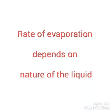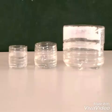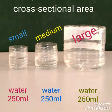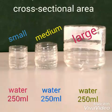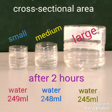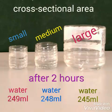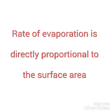You will conclude that the rate of evaporation is different for different materials. Now, take bottles of three different cross-sectional areas. Fill each bottle with 250 ml of water and keep it aside in the room. After two hours, you will notice that water evaporates more in the bottle whose cross-sectional area is greater. Thus, we can conclude that the rate of evaporation is directly proportional to the surface area.